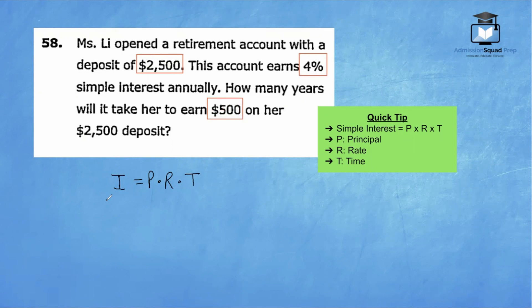After plugging in our values, we will have 500 equals 2,500 times 0.04 times T. I personally prefer to treat the percent as a fraction because it's a lot easier for me to simplify. So I'll show you guys that strategy.